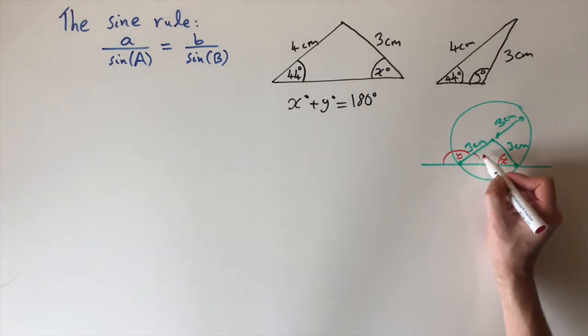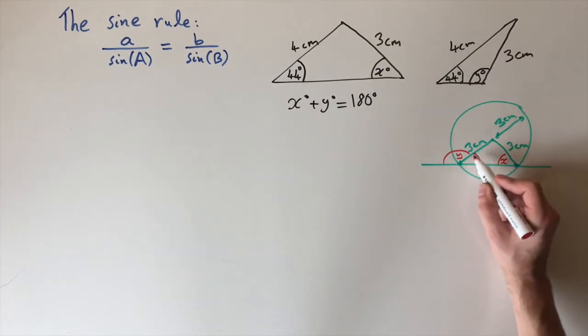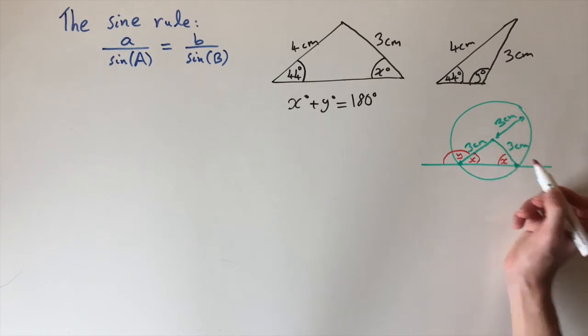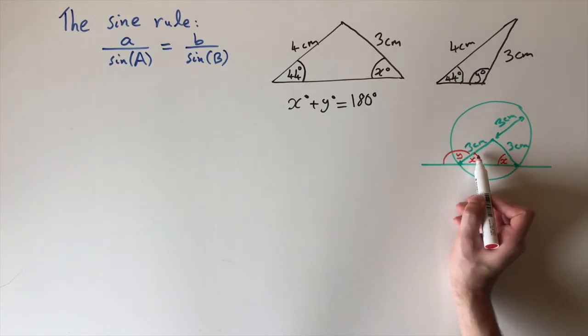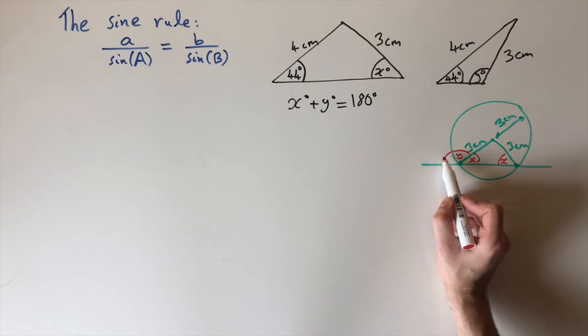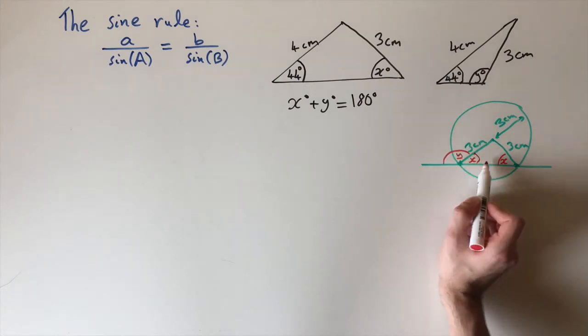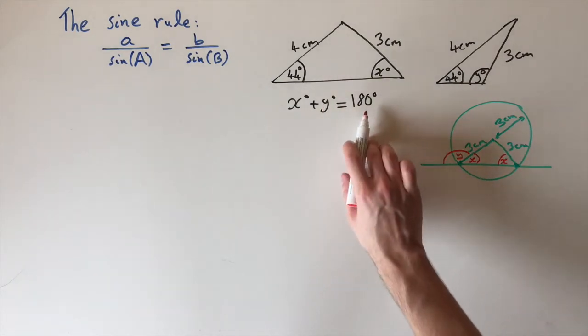that this angle in here is exactly the same as this one, because both of these lengths are the same. So this is x degrees. And now we have x and y. They make up 180 degrees, so they make up one side of the line. That's how we see that x plus y equals 180 degrees.